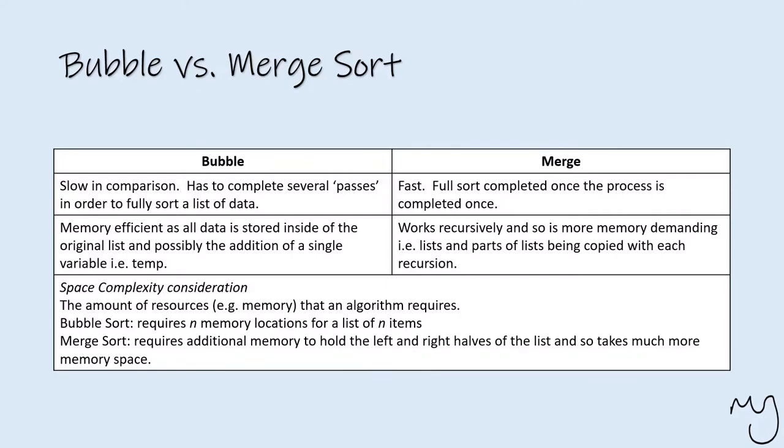On the memory side, bubble is efficient as all data is stored inside of the original list and possibly the additional temporary storage place that I mentioned earlier as well momentarily whilst things are being swapped around. But the merge sort in this case isn't favorable. Because it's working recursively, it has such a heavy dependence on memory that it makes up a hell of a lot more than it does on the bubble sort side. So in terms of efficiency, memory-wise, the merge sort doesn't compare as well.